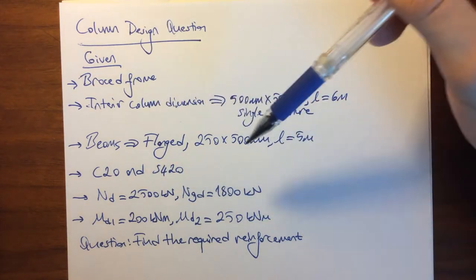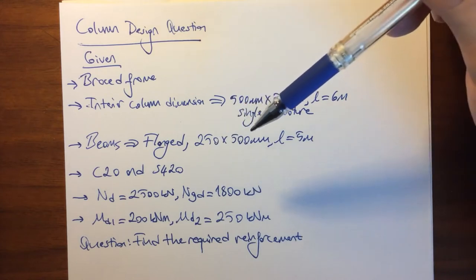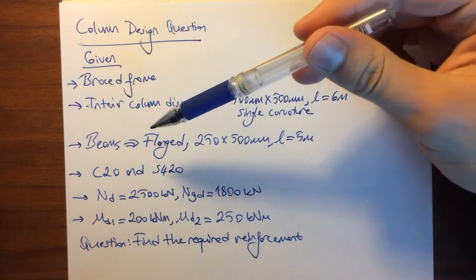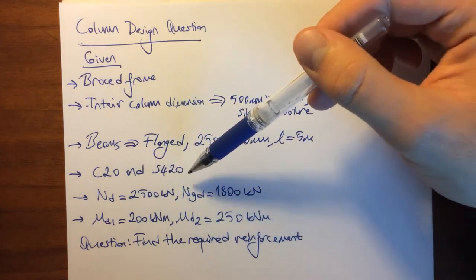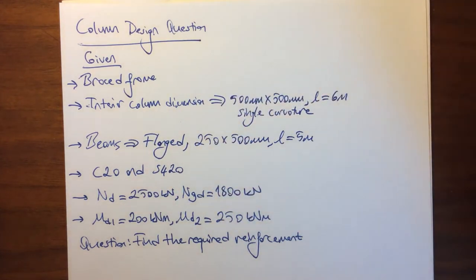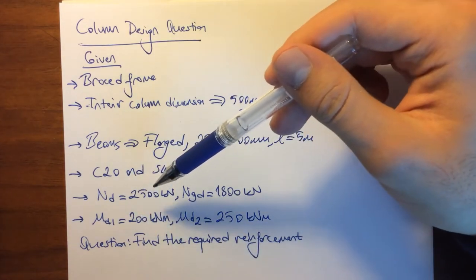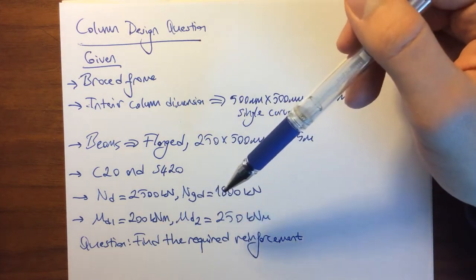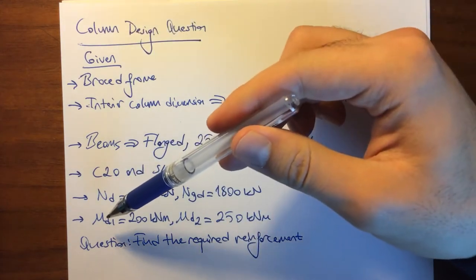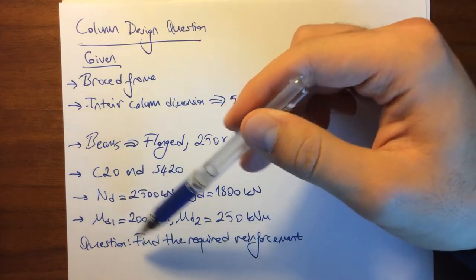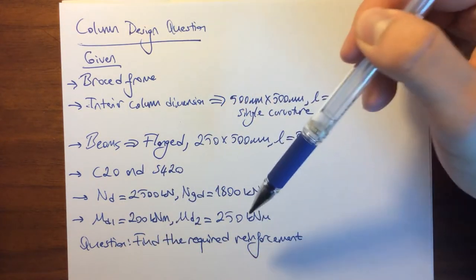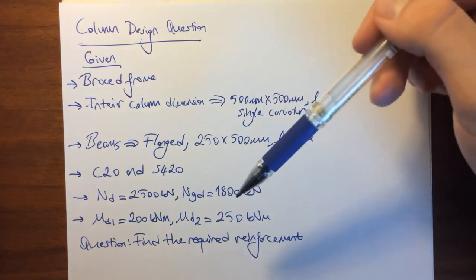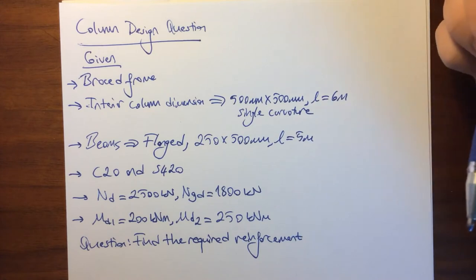We are using C20 and S420 steels. Nd is given as 2500 kilonewtons and Ngd is given as 1800 kilonewtons. The first design moment is 200 kilonewton meters and the second design moment is 250 kilonewton meters. The question is to find the required reinforcement.